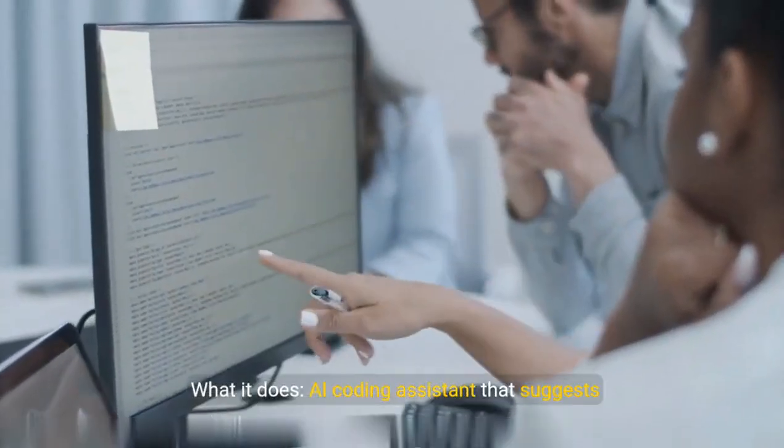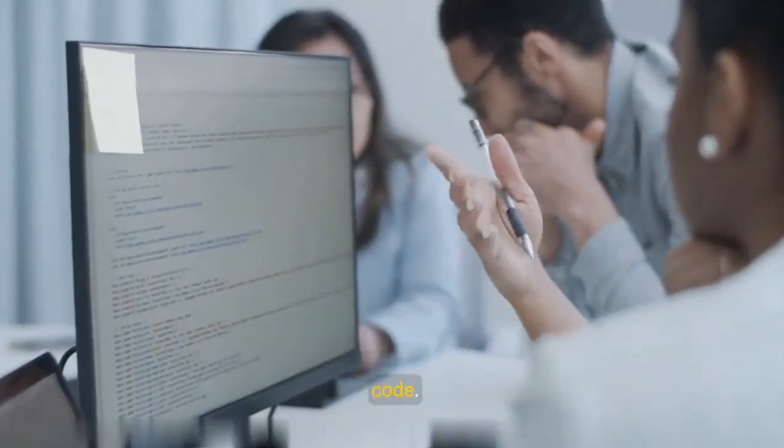GitHub Copilot. What it does: AI-coding assistant that suggests code. Use case: Developers, engineers, software teams.